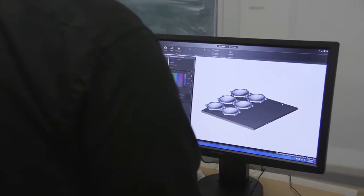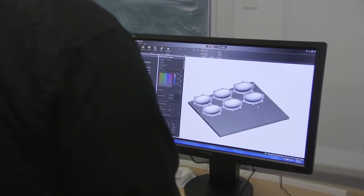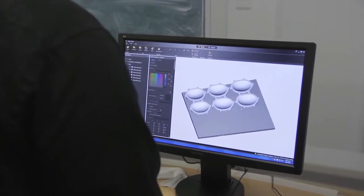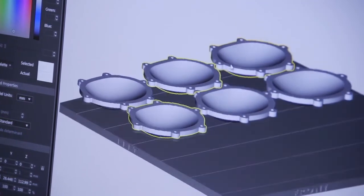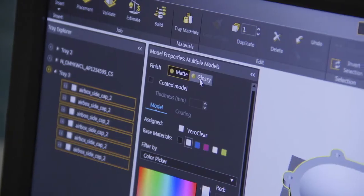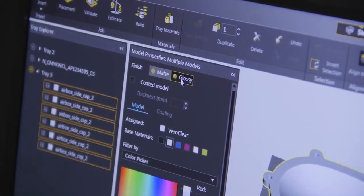Properly adjusting print settings helps to increase model clarity and reduce post-processing. Let's review these adjustments. Orient the model so that the critical surface faces upward. For maximum clarity, choose the glossy surface finish.